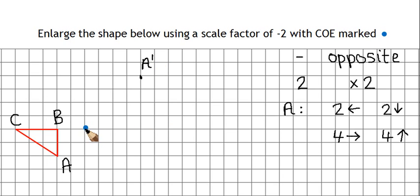Same process now for the other two points. B is 2 left. Now the opposite of left is right, and 2 multiplied by 2 is 4. So my new B will be 4 squares to the right. And C, well that's 5 squares left. Double 5 is 10. So we're going to be going the opposite direction, 10 squares to the right.